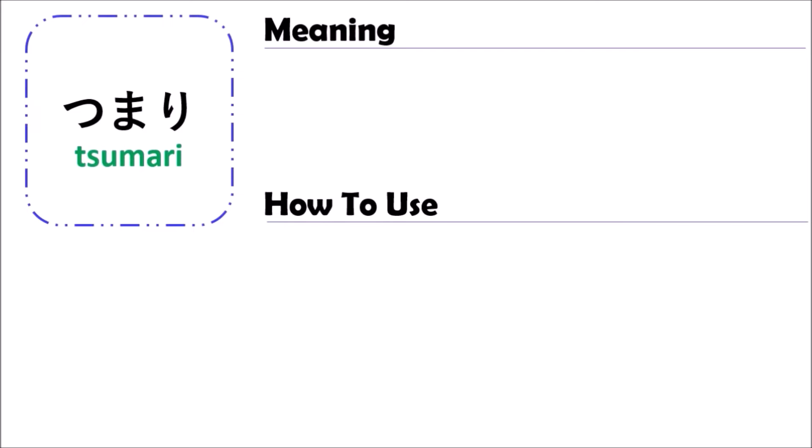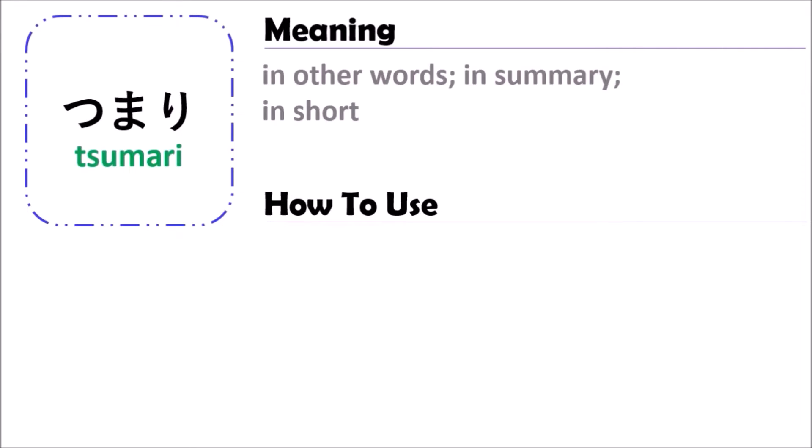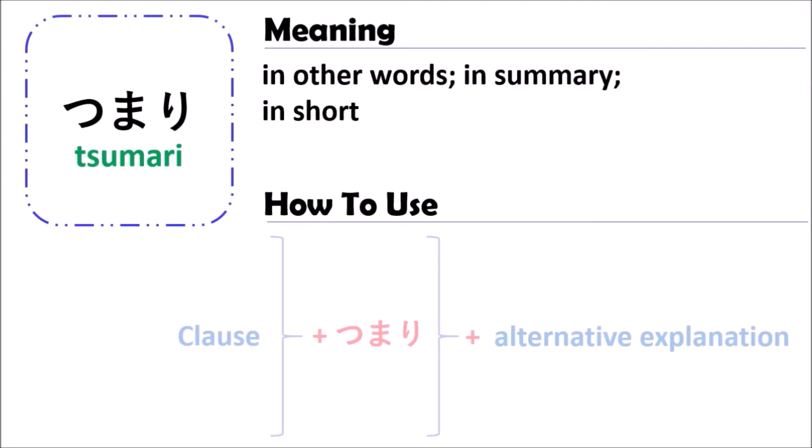Tsumari. The grammar of Tsumari means, in other words, in summary, or in short. In Japanese, when you use the grammar of Tsumari, you should begin with some clause, followed by Tsumari, and then followed by alternative explanations. It has the meaning of 'in other words,' 'in summary,' or 'in short.'